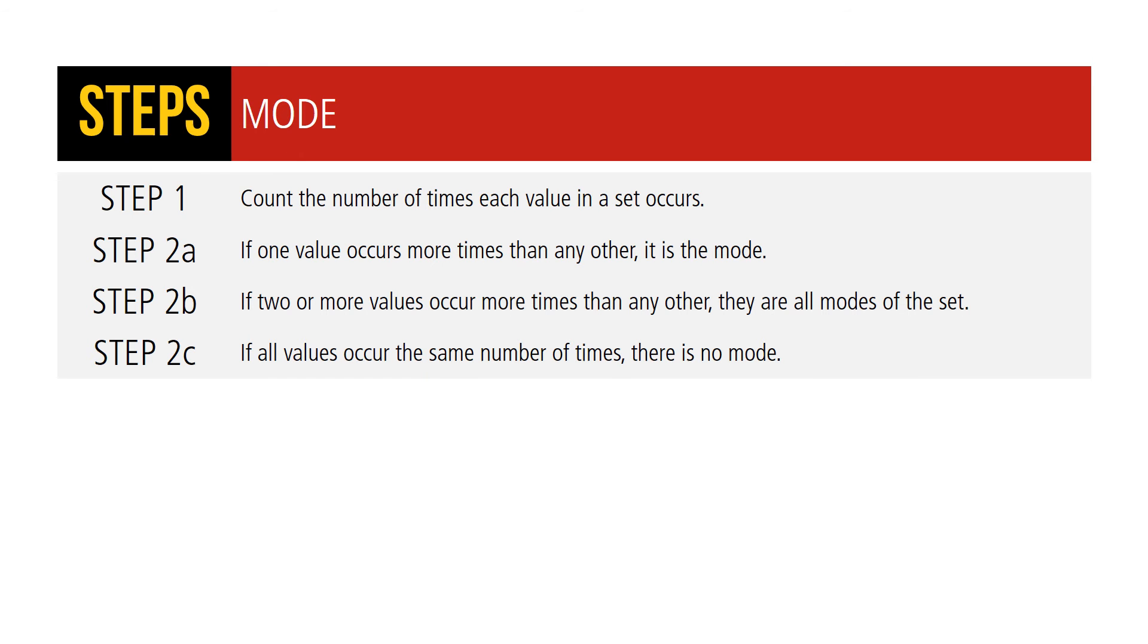To determine the mode: Step 1, count the number of times each value in a set occurs. Step 2a, if one value occurs more times than any other, it is the mode. Step 2b, if two or more values occur more times than any other, they are the modes of the set. Step 2c, if all values occur the same number of times, there is no mode.